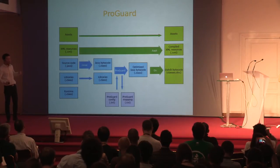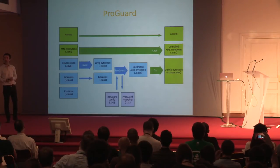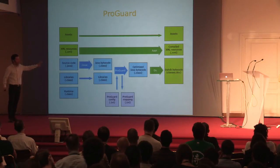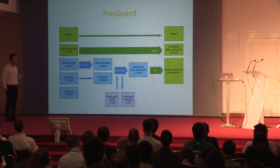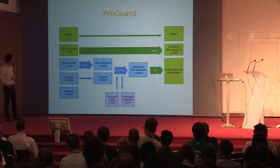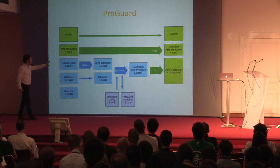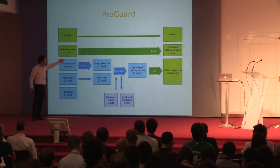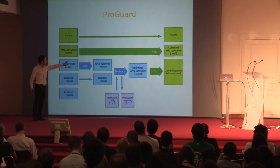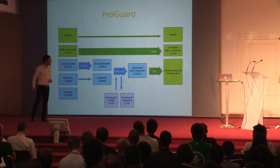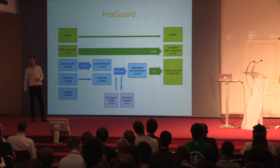Let me quickly introduce how ProGuard is inserted in the build process. It ends up right in the middle of that compilation process. If you enable ProGuard in your Gradle build or your Ant build or Eclipse build, it is inserted and activated right there—after the Java compiler has compiled to Java bytecode, and before the DEX compiler compiles the Java bytecode to Dalvik bytecode.